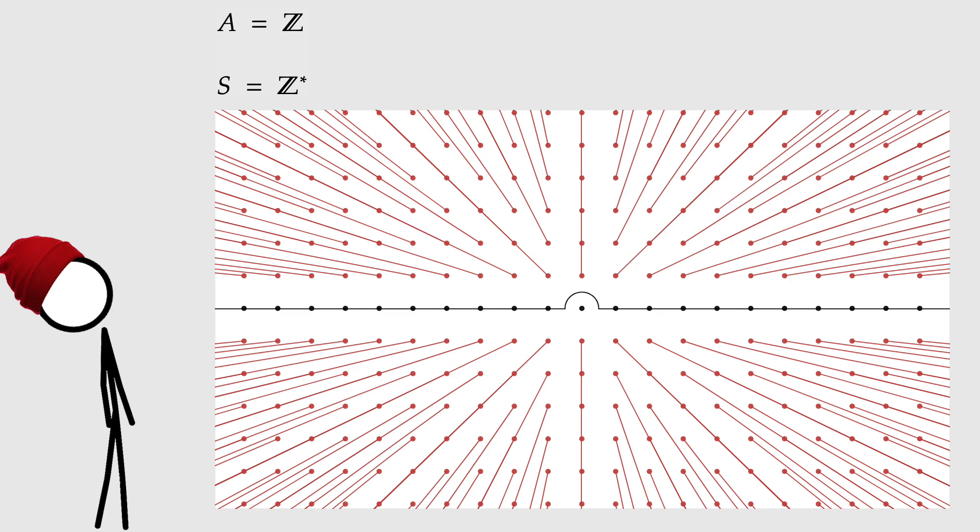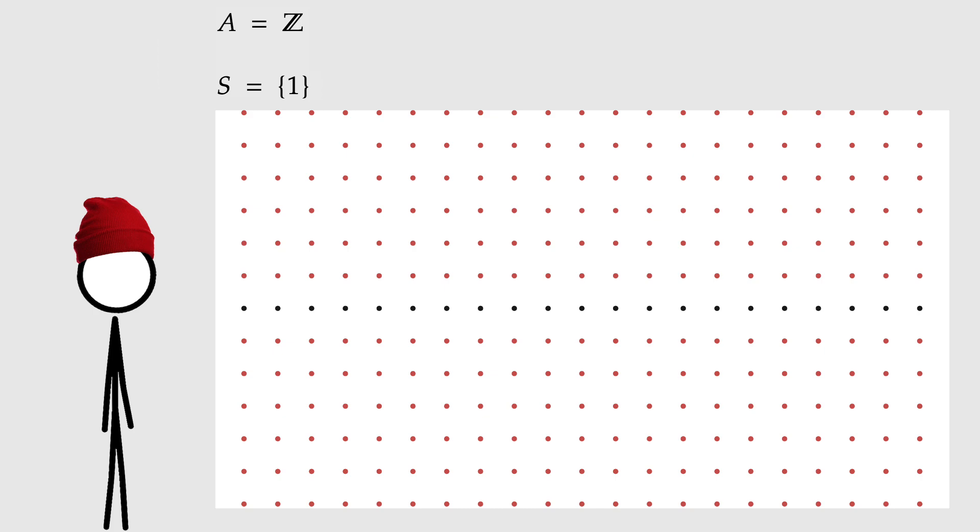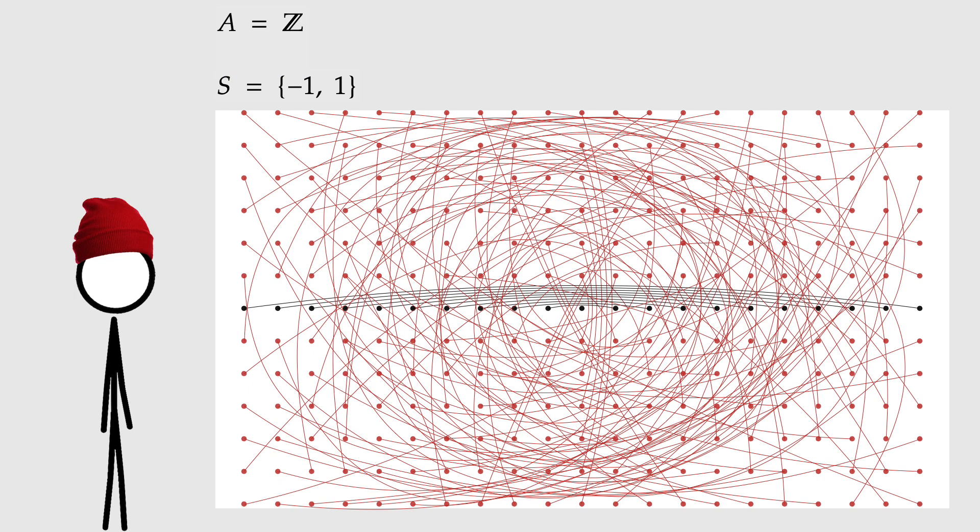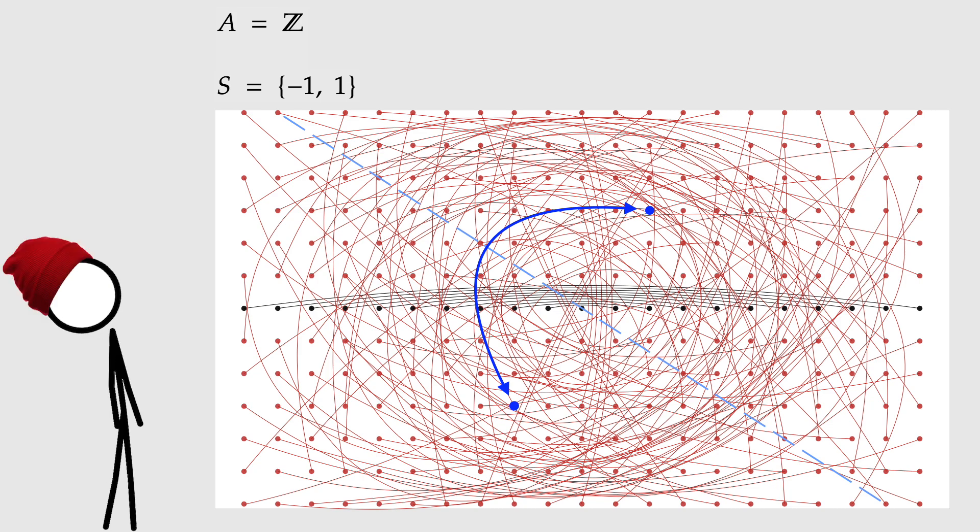Anyway, back to wheel algebra. A is the set of integers, S is the set of integers without zero, so what happens if we change S to be, I don't know, a single number one? Oh, the lines have all disappeared. All the fractions have become their own separate little islands. Okay, what if I change S to the set negative one, one? Oh, each point is connected to its negative. Yeah. Oh, hey, that kind of makes sense. S equals negative one, one.